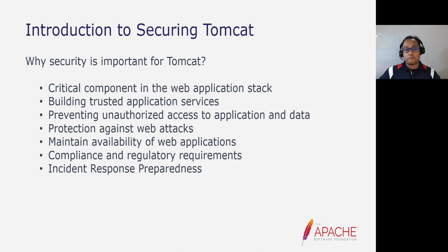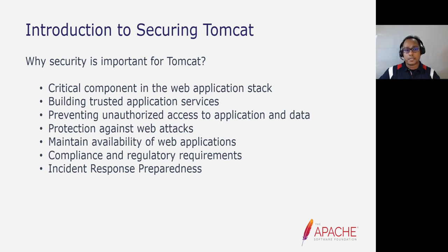Unsecured Tomcat installations are vulnerable to unauthorized access, putting sensitive data and application functionalities at risk. By implementing robust access control mechanisms and proper user management, we can prevent unauthorized individuals from exploiting vulnerabilities. Tomcat is also exposed to various web-based attacks such as cross-site scripting attacks. A compromised Tomcat instance can lead to data breaches, defacements, or potential legal liabilities. Employing security measures like input validation, secure coding practices, and web application firewalls can mitigate such attacks. Securing Tomcat also includes measures to ensure high availability such as load balancing, clustering, and failover configurations, allowing web applications to continue serving users even under heavy traffic or partial failure.